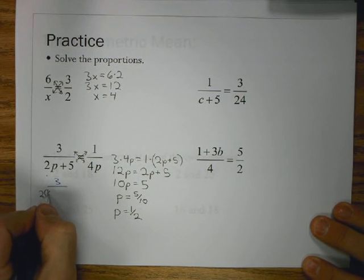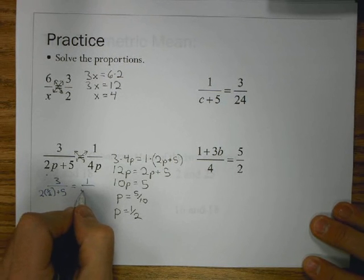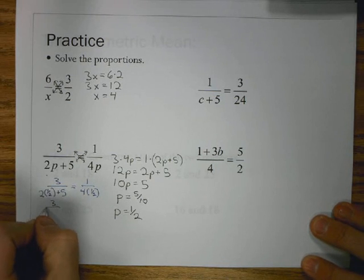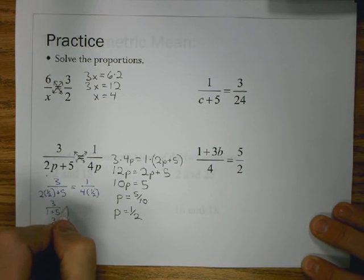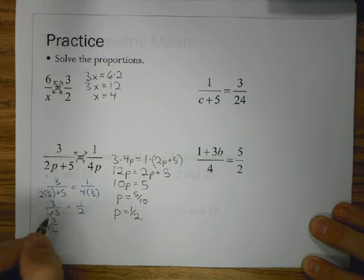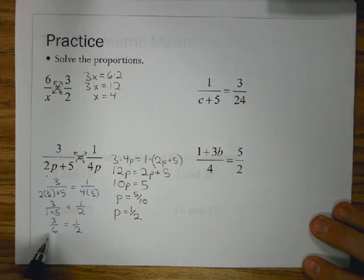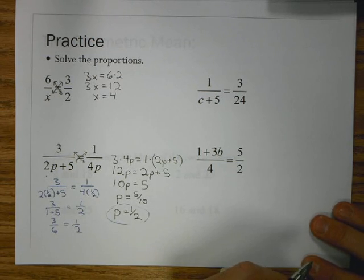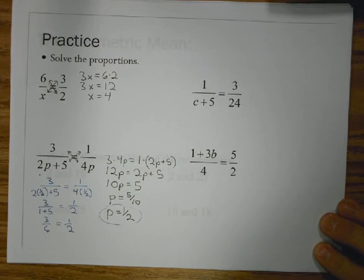Now, let's check to make sure. So, let's plug this back in and see how it actually does work for us. So, if I plug that 1 half in for P, I get 2 times 1 half plus 5 in the denominator for my first fraction. And 1 over 4 times 1 half in my second ratio becomes 3 over 6. And the right side becomes 1 half. And I can see 3 over 6 is equal to 1 half. So, as we find these values in proportions, we're really finding the value that makes it work.